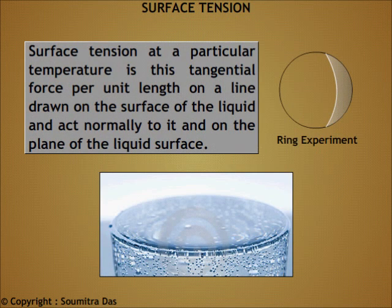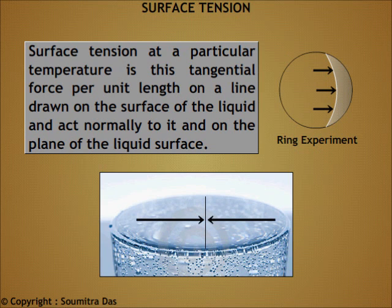Surface tension at a particular temperature is the tangential force per unit length on a line drawn on the surface of the liquid, acting normally to it and on the plane of the liquid surface.